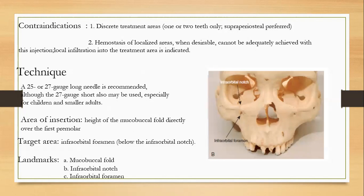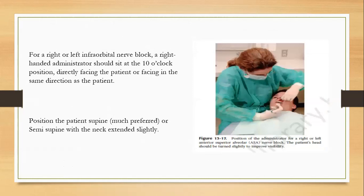Contraindications include very discrete areas and when localized hemostasis cannot be carefully achieved. The technique uses a 27-gauge long needle, though a short needle can also be used. The area of insertion is the height of the mucobuccal fold directly over the first premolar, targeting the infraorbital foramen. Landmarks include the mucobuccal fold, the infraorbital notch, and the infraorbital foramen. First palpate the supraorbital notch, then the infraorbital notch, and pass your thumb downward to feel the infraorbital depression — a concavity that represents the infraorbital foramen.